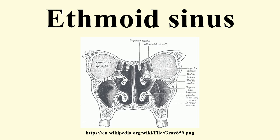Pathology — Acute ethmoiditis: In childhood, an ethmoidal infection may spread superiorly, causing meningitis and cerebrospinal fluid leakage, or it may spread laterally into the orbit, causing proptosis and diplopia.